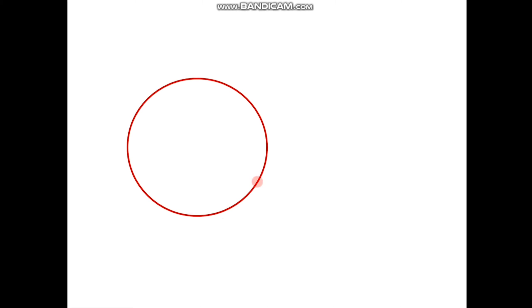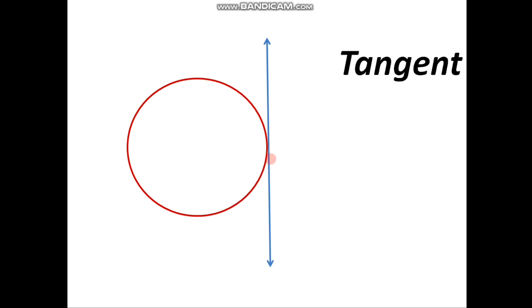Let us consider one circle in a plane. In the same plane suppose there is one line given. Now if the line touches the circle at only one point, it is called a tangent of a circle, and the point at which it touches the circle is called the point of contact. Here, line l touches the circle at point A, that's why line l is called a tangent of a circle and point A is the point of contact.